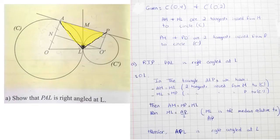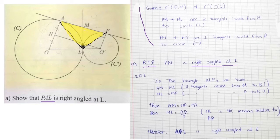In part A, the question is: show that PAL is right-angled at L. As in any geometry question, I write the given, I write what is required to prove, and then work on the right angle triangle. To prove a right angle triangle I have two methods: Pythagoras and median relative to the hypotenuse.